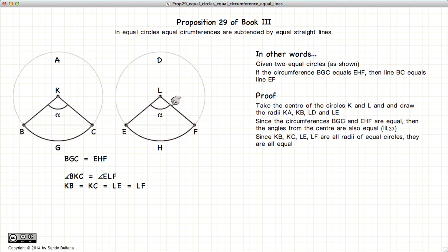BK, KC, EL, and LF are all radii of the same circle, so they are all equal.